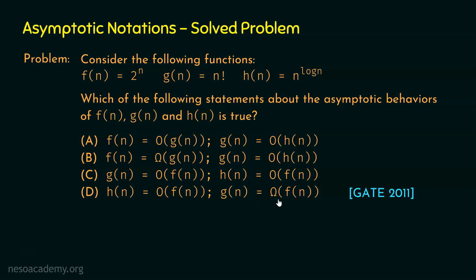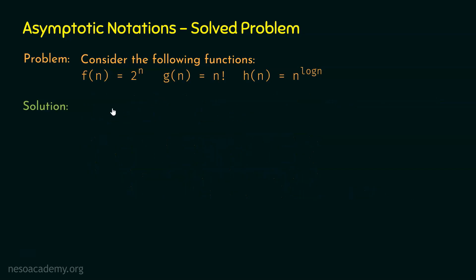Let's try to find which statement is correct. For this, we need to compare fn, gn, and hn. We have fn equal to 2 power n, gn equal to n factorial, and hn equal to n power log n. We can observe that fn and hn are both of the form something to the power something. So let's compare fn and hn first.